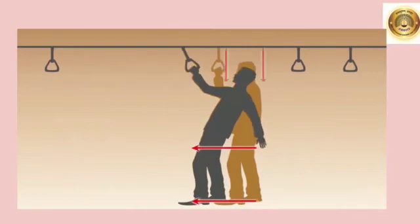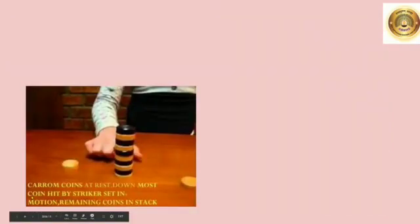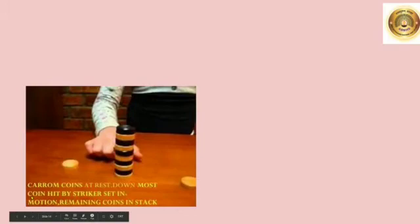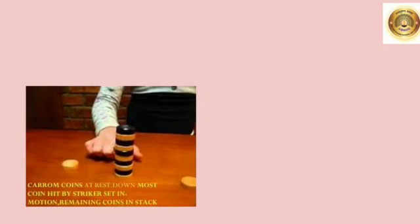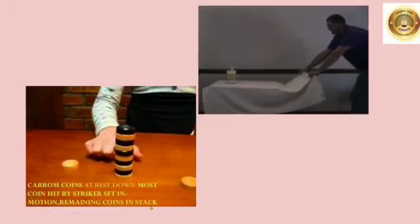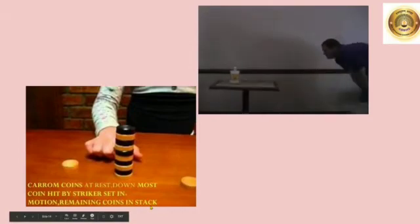Inertia of rest explains why a passenger in a bus falls backward when the bus suddenly starts. Now, place a pile of similar carom coins on the table and use the striker to hit at the bottom of the pile. If we hit strong enough, the bottom coin moves out. Once the lowest coin is removed, the inertia of the other coins makes them stay vertically on the table. In this picture also, the same thing happens when the person is pulling the sheet — because of the force, only the sheet is getting pulled.